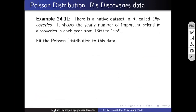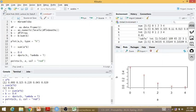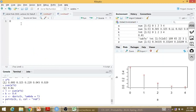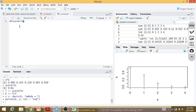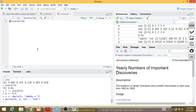The next example uses a native R dataset called 'discoveries', which shows the yearly number of important scientific discoveries for each year from 1860 to 1959. I want to try to fit the Poisson distribution to this data to see if it is more or less Poisson distributed.